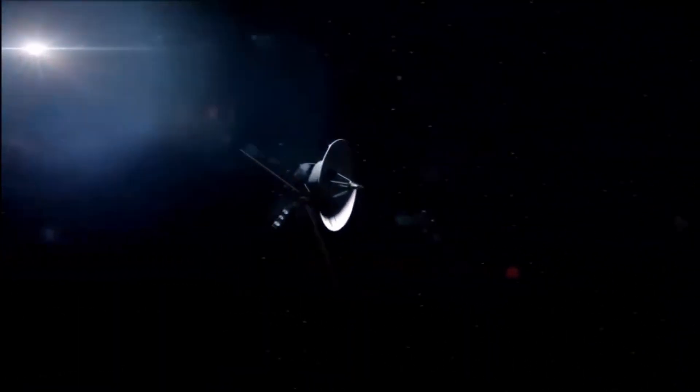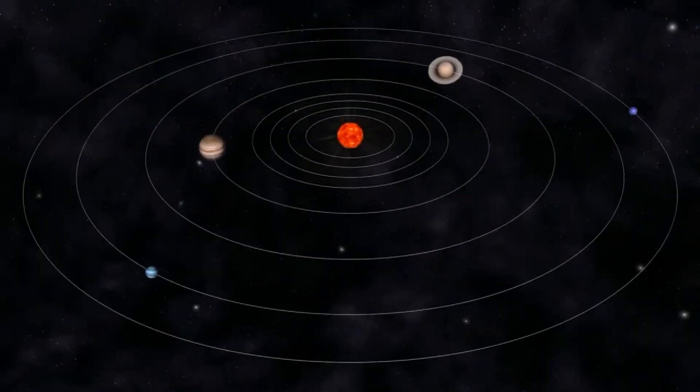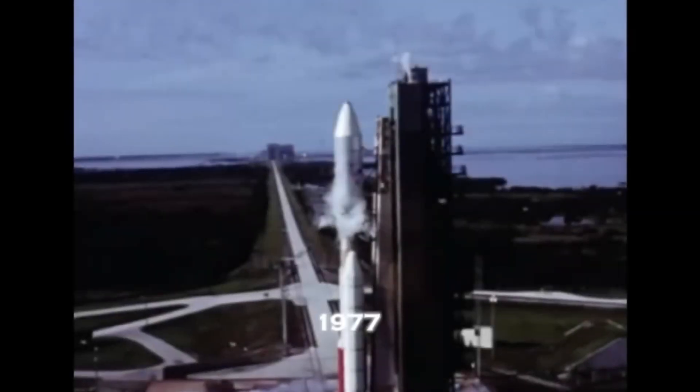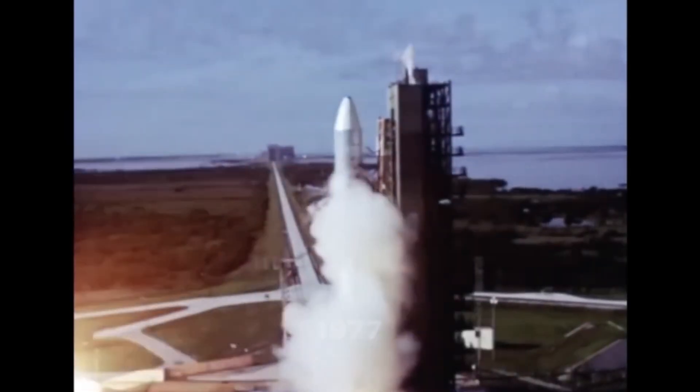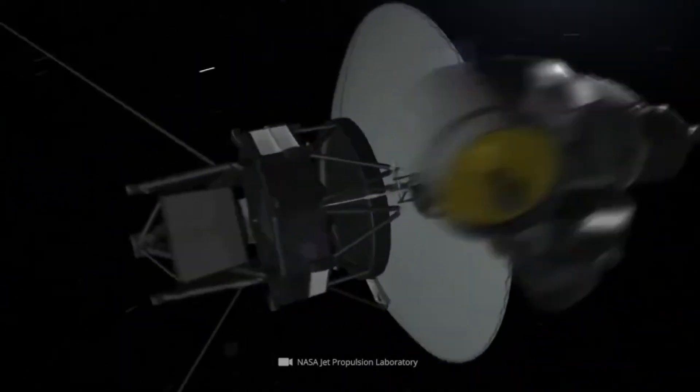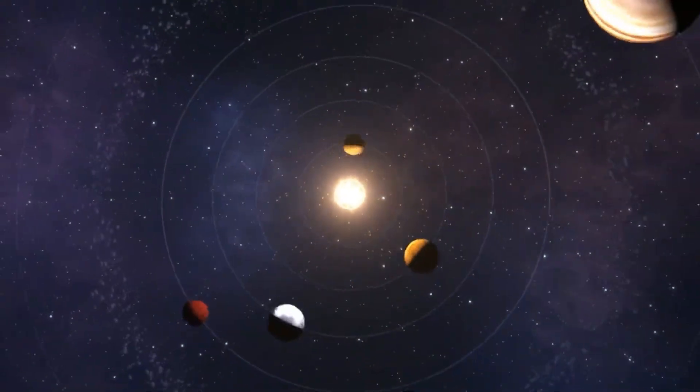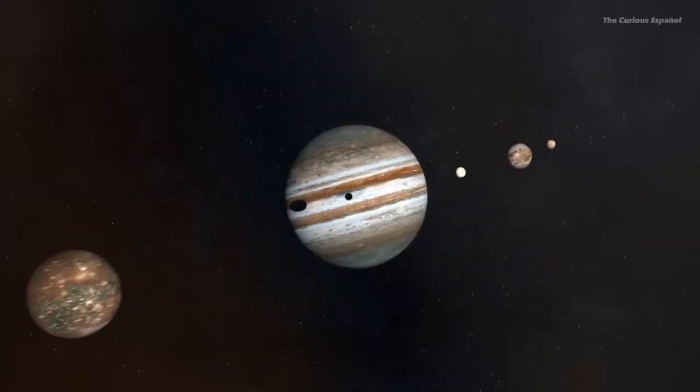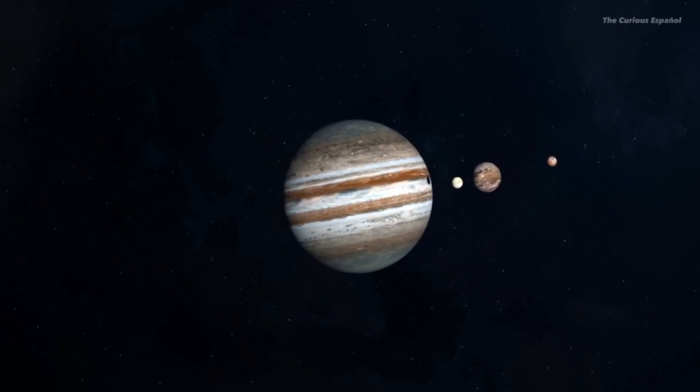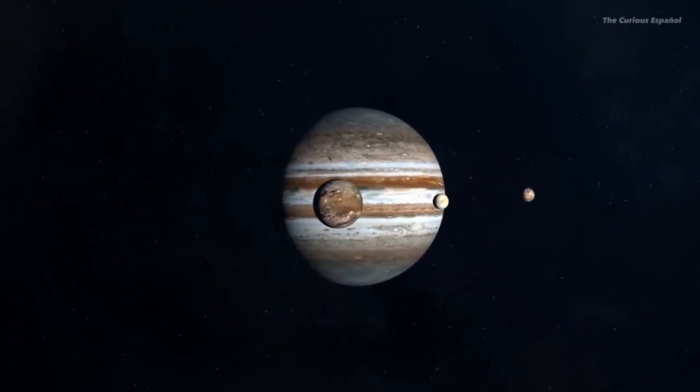In 1977, NASA launched two space probes, Voyager 1 and Voyager 2. Designed to take advantage of a planetary alignment that occurs only once every 176 years, the mission aimed to make a grand tour of the outer planets using the gravitational slingshot effect of Jupiter, Saturn, Uranus, and Neptune to propel the probes deeper into the solar system.